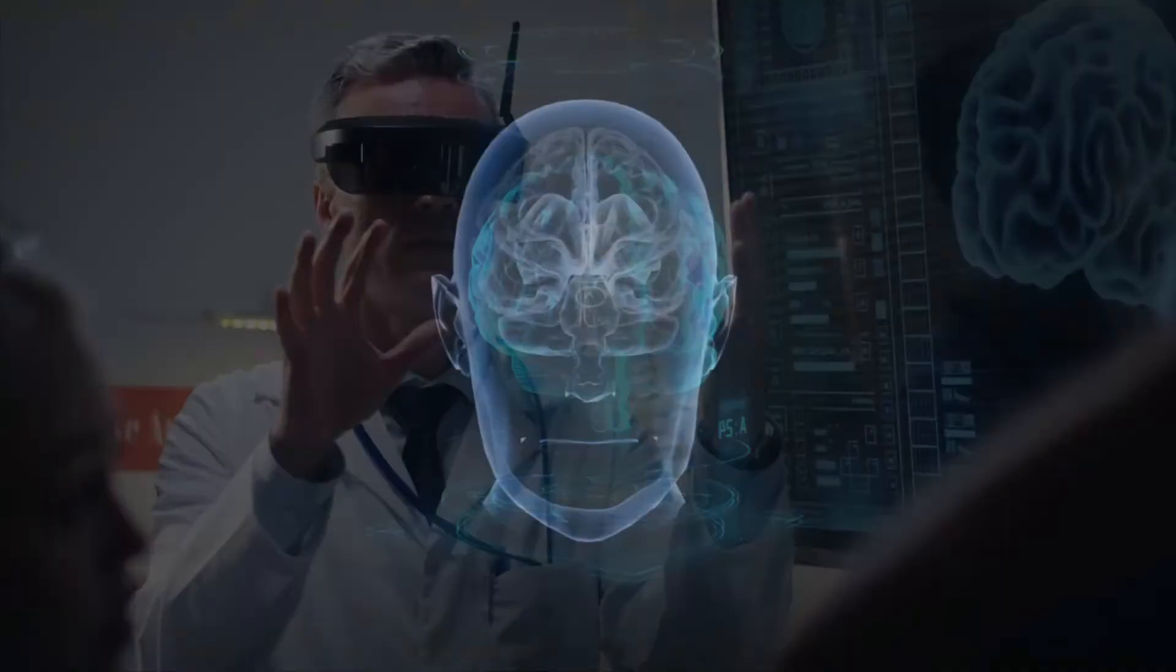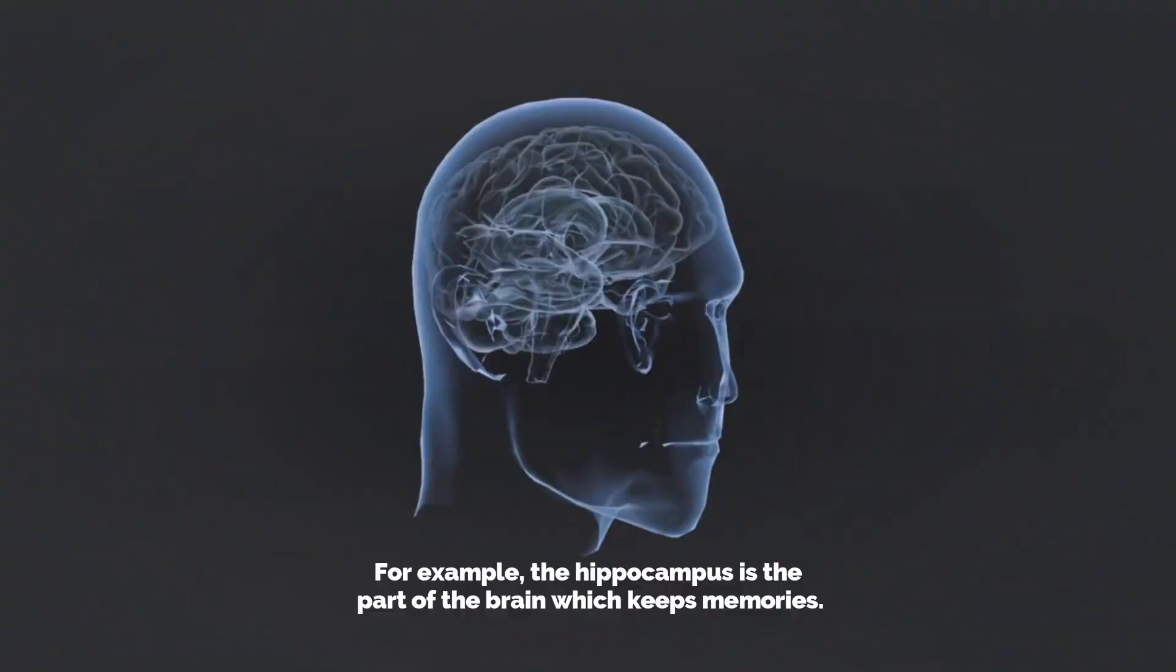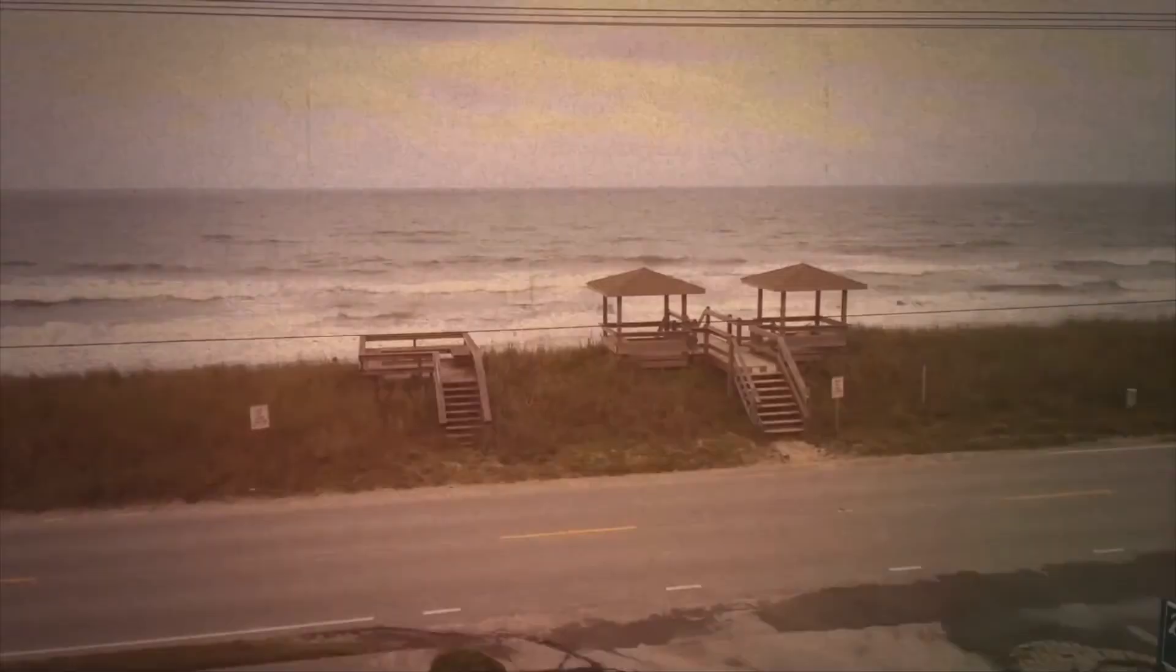Different thoughts occur in different places and go to various other places through several networks. For example, the hippocampus is the part of the brain which keeps memories.